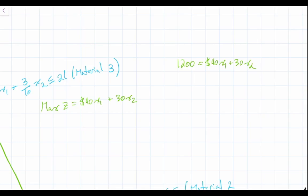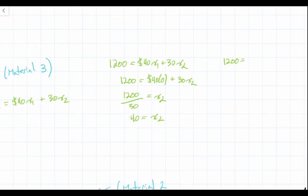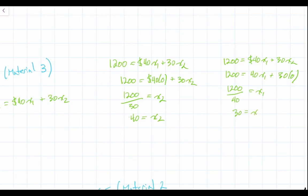From there, I can solve for x1 and x2 by letting x1 equal to 0. So 1200 is equal to 40 times 0 plus 30x2, which means that 1200 divided by 30 is equal to x2. We can do exactly the same for x1: set x2 equal to 0, so 1200 is equal to 40x1, and 1200 divided by 40 is equal to x1, which is 30.